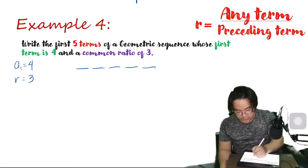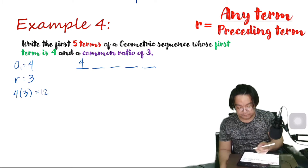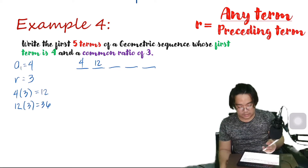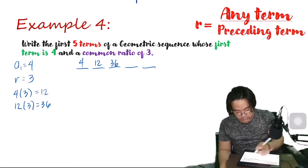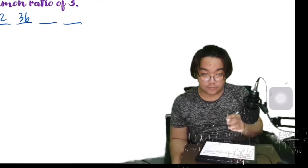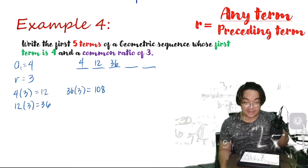The first term is already 4. To get the second term, we multiply 4 times 3, which gives us 12. Then to get the next term, that's 12 times 3, which gives us 36. So 36 is our third term. To get the fourth term, that's 36 times 3. If you want to multiply quickly, use your calculator, or simply 30 times 3 is 90 and 6 times 3 is 18, so 18 plus 90 is 108. I hope I make sense there.